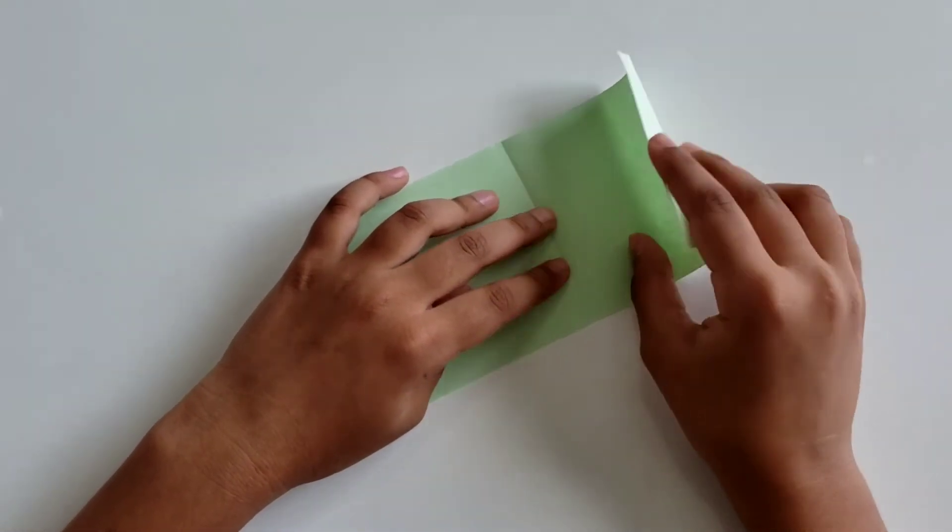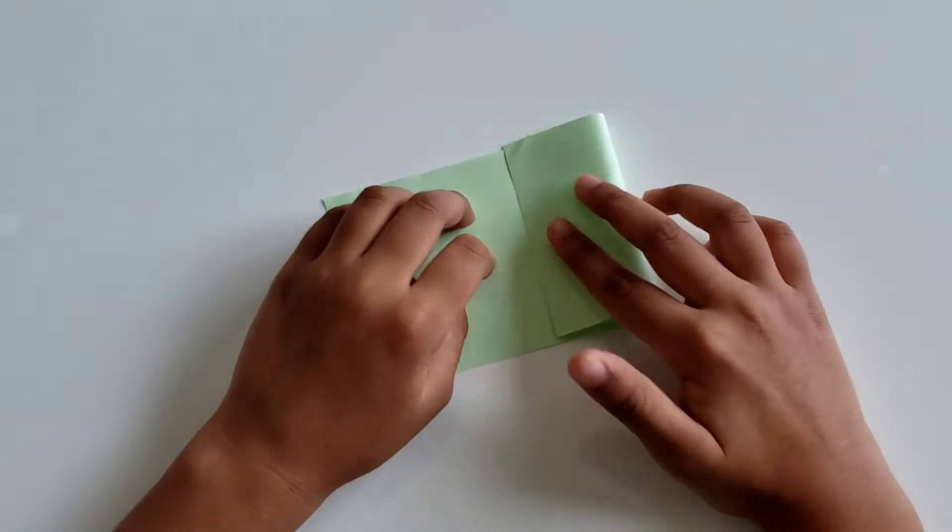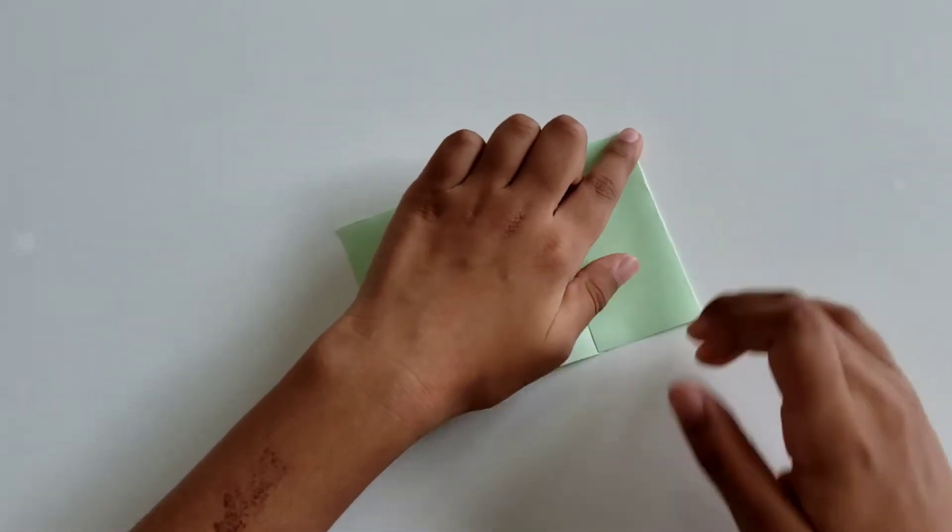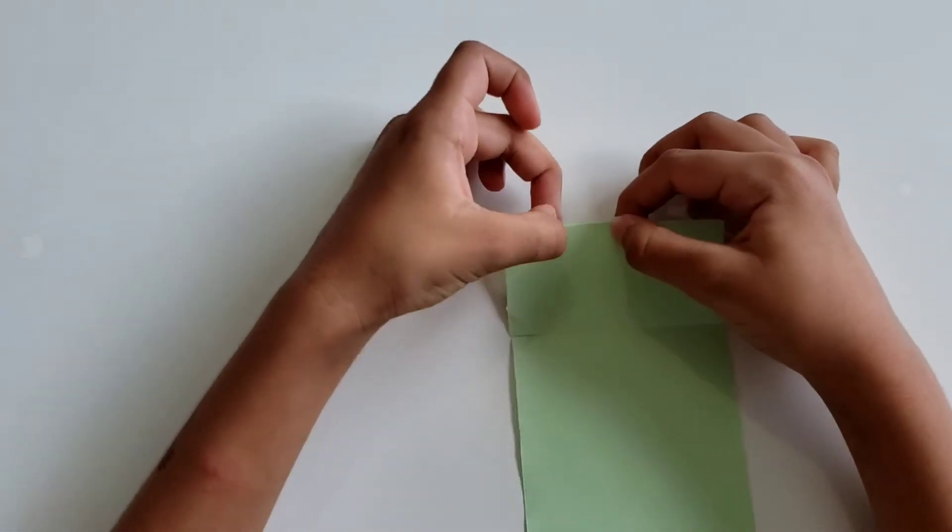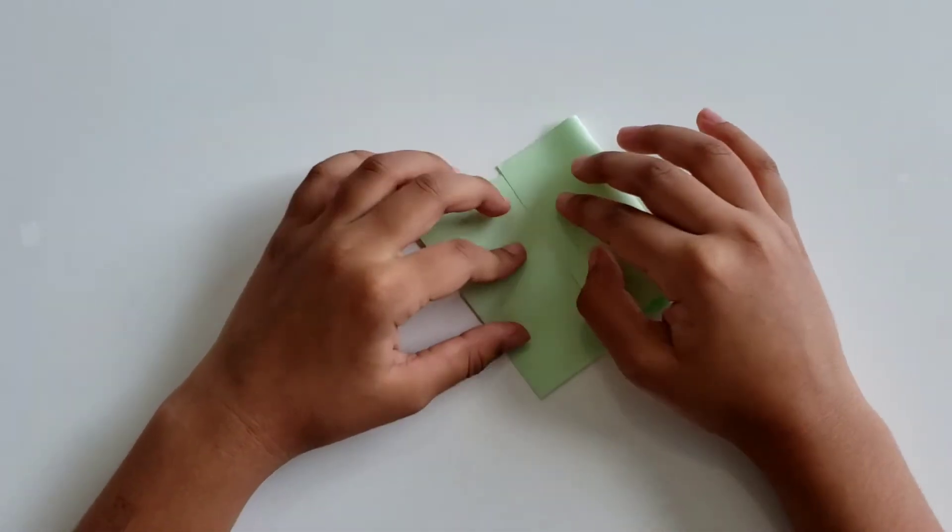Now take one end and fold it to the center crease we made. Crease well. Now do it with the other side.